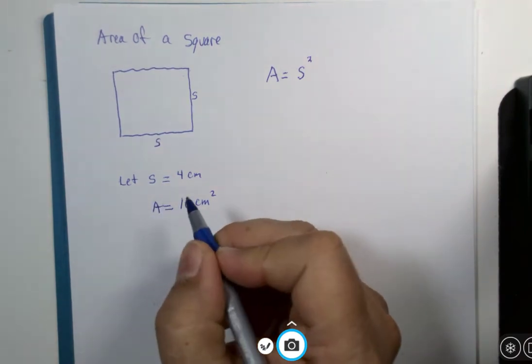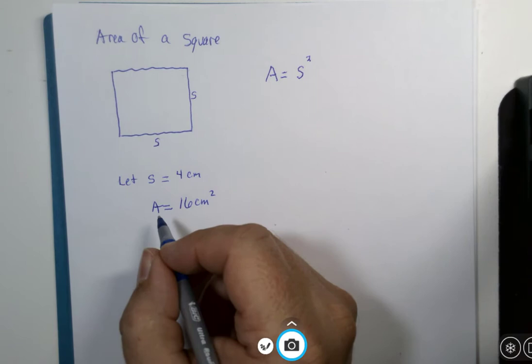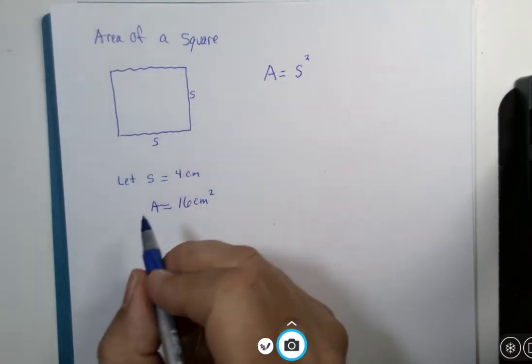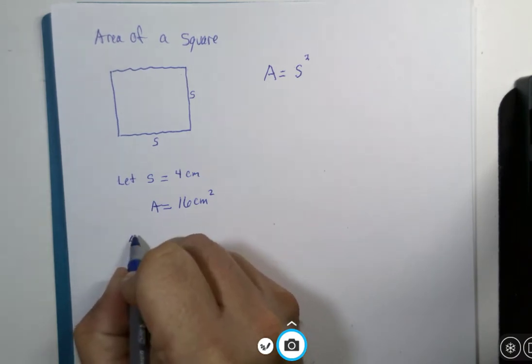That would be our area. Now, let's suppose also that the device measuring the sides of the square has a possible error called Delta S, and that is 0.1 centimeters, also known as 1 millimeter.